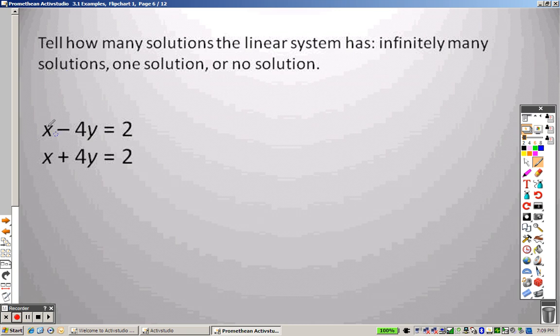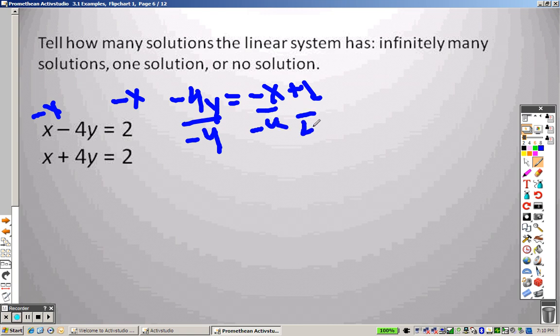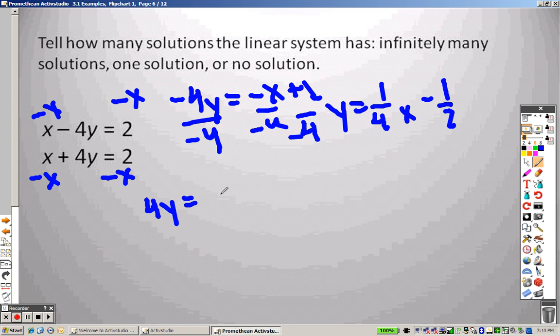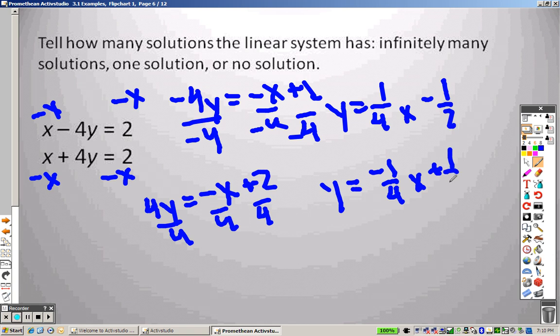Next problem. Doing this, I would subtract x from both sides. So I get negative 4y equals negative x plus 2. I divide both sides by negative 4, and just like the last problem, I get y equals 1/4 x minus 1/2. Subtract x from both sides of the other equation, and I get 4y equals negative x plus 2. I divide by 4 and get y equals -1/4 x plus 1/2. Do they have the same slope? No. Are they the same exact equation? No. Which means they will cross at one point, which means there is one solution to that problem.